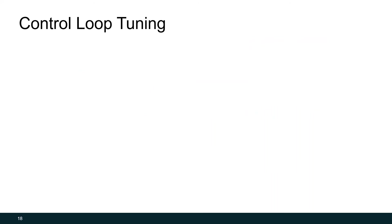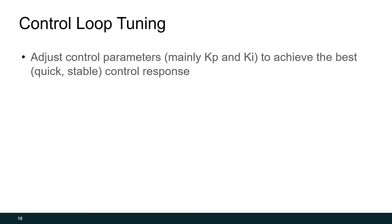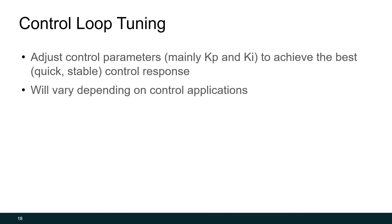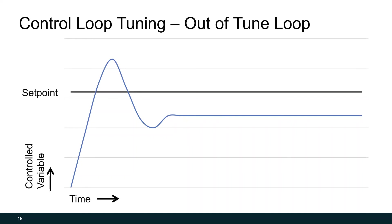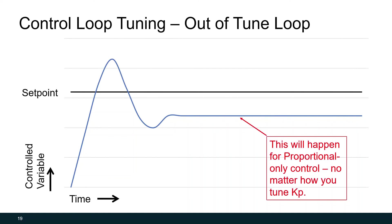What's important in any of these sequences is that you tune your control loops. We'll adjust the control parameters — in modulating control, we're adjusting KP and KI, which are the coefficients that we multiply the error by. In on-off control, you're adjusting your control differential. The goal is to achieve the best quick, stable control response. What these parameters need to be will vary vastly depending on the application, and tuning them is not an easy task — it's usually done by your control contractor or a third-party commissioning agent. If your loop is out of tune and you're only using a proportional loop, you might end up with a permanent bias significantly different than your set point. With proportional control, no matter how well you tune KP, there'll always be some bias, but at least you can get closer to your set point.